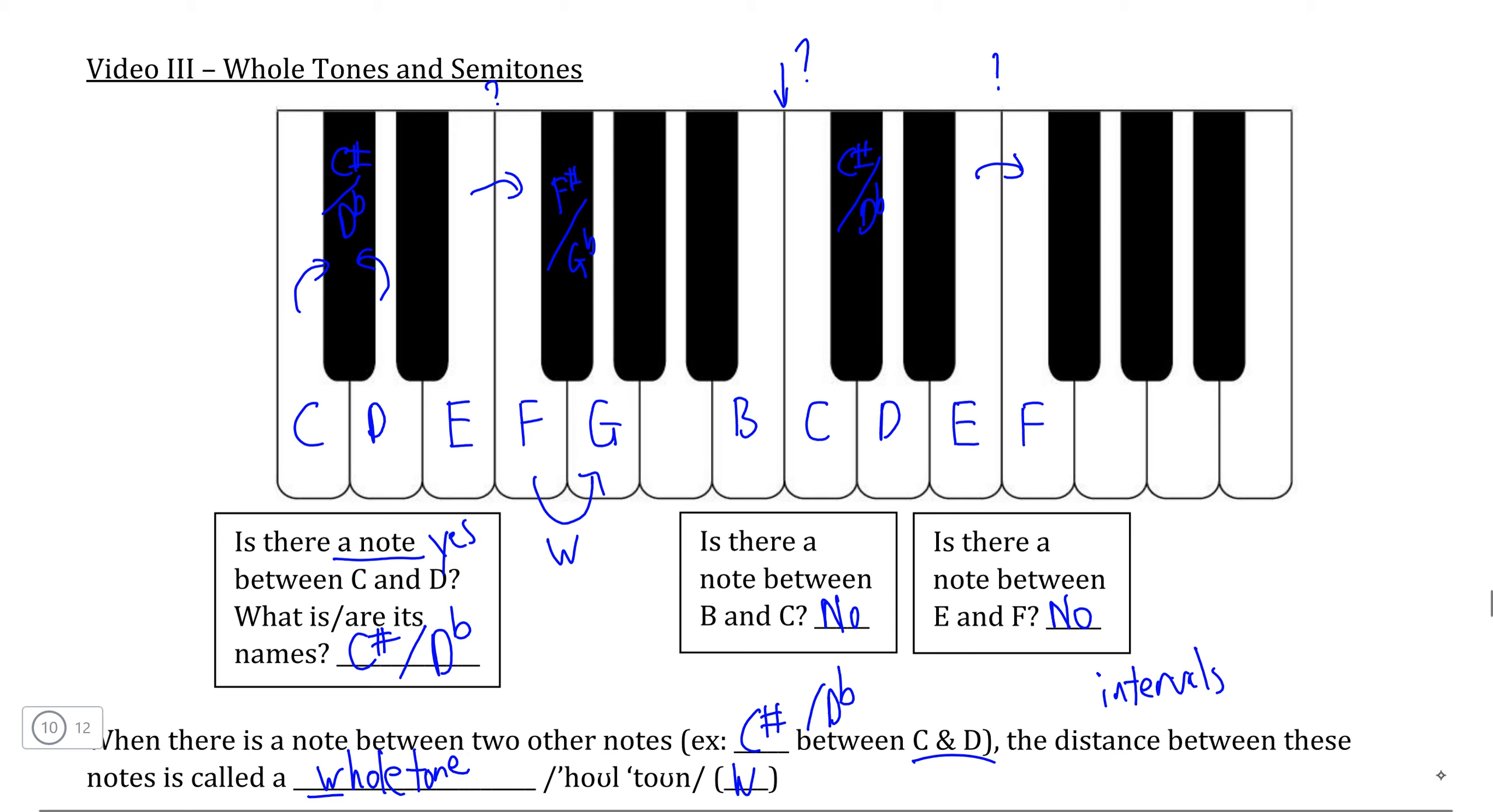Well, what if we actually wanted to find the distance between a black key and a white key? So if we were to take G sharp or A flat here and find the distance between this and A natural, for example. Well, if we go from this black key to A, is there another key in between G sharp or A flat and A? Well, obviously not because they're literally right next to each other, and therefore the distance between G sharp and A would be a semitone.